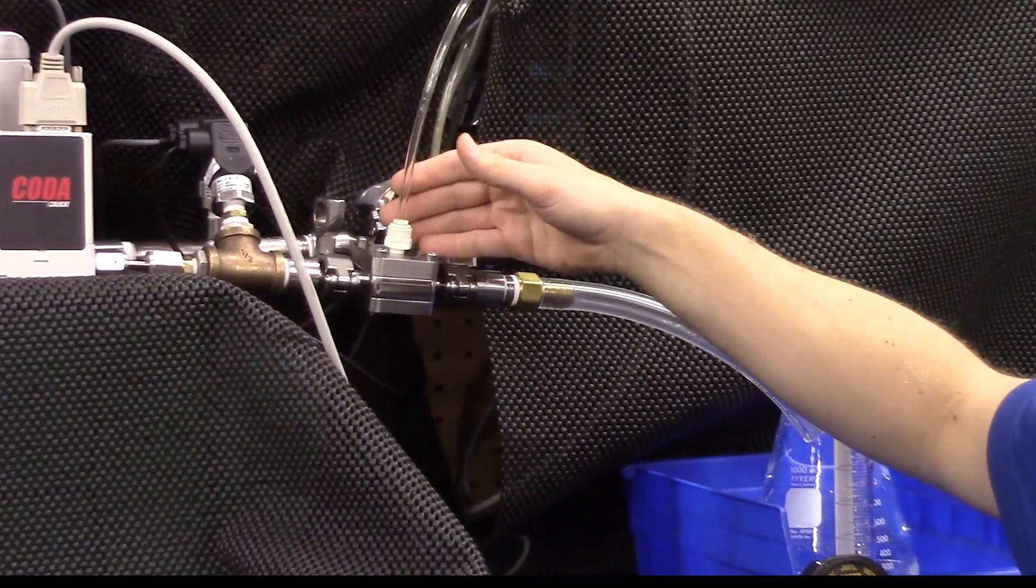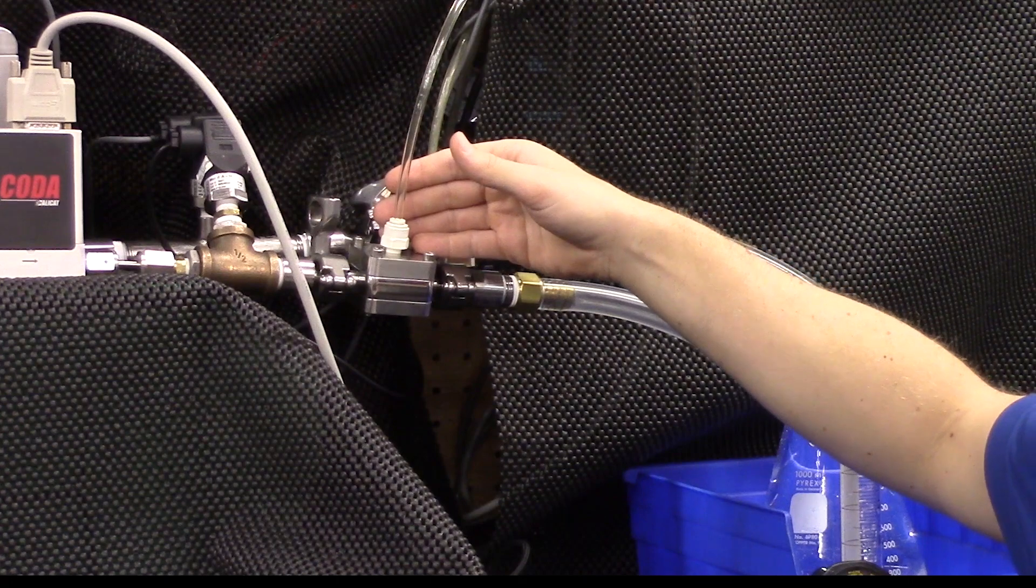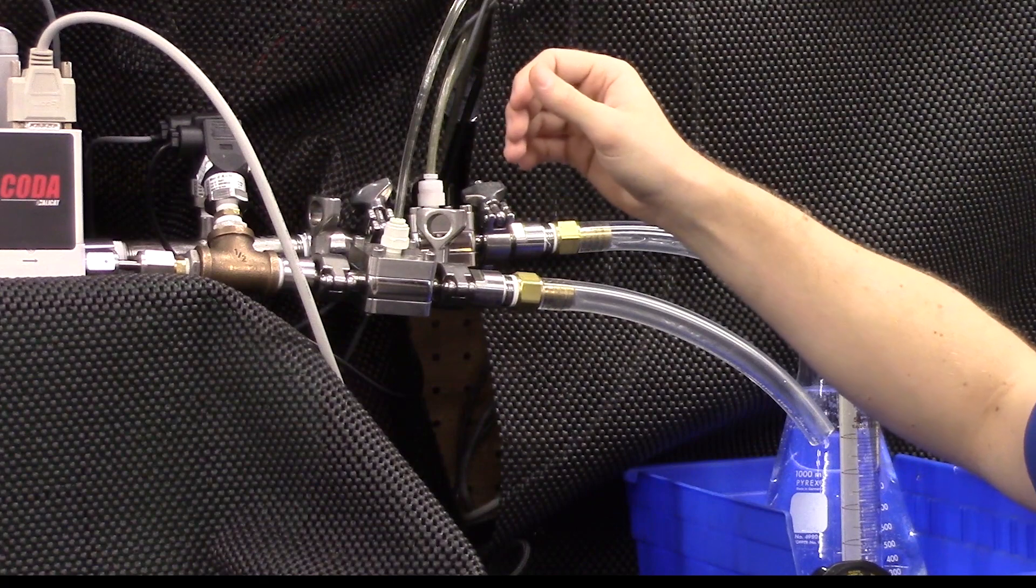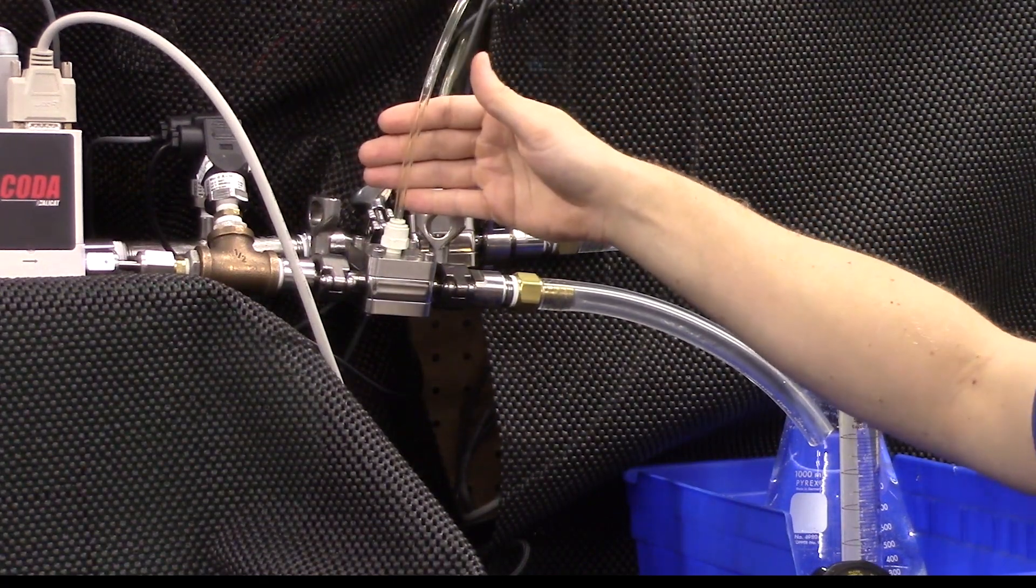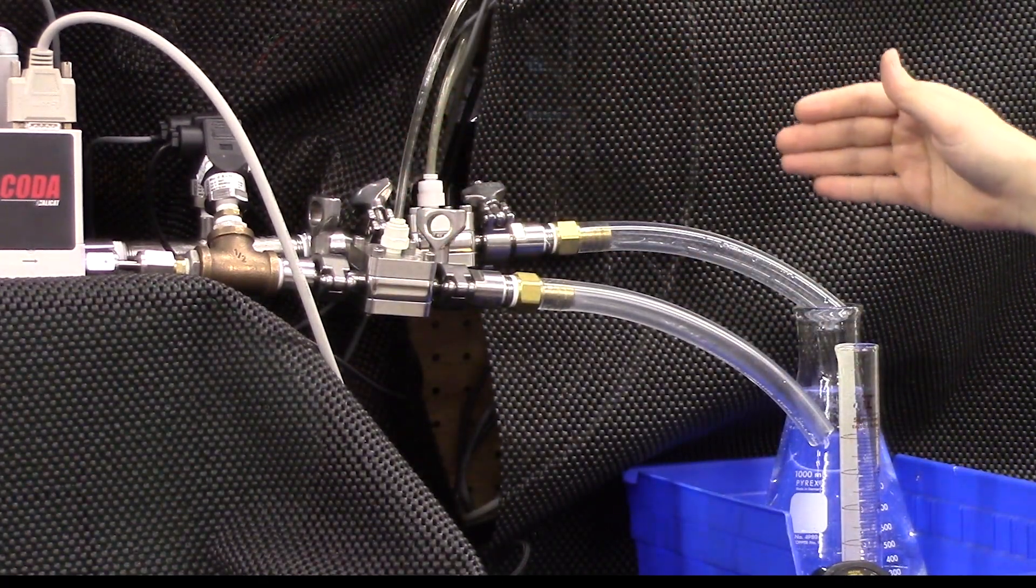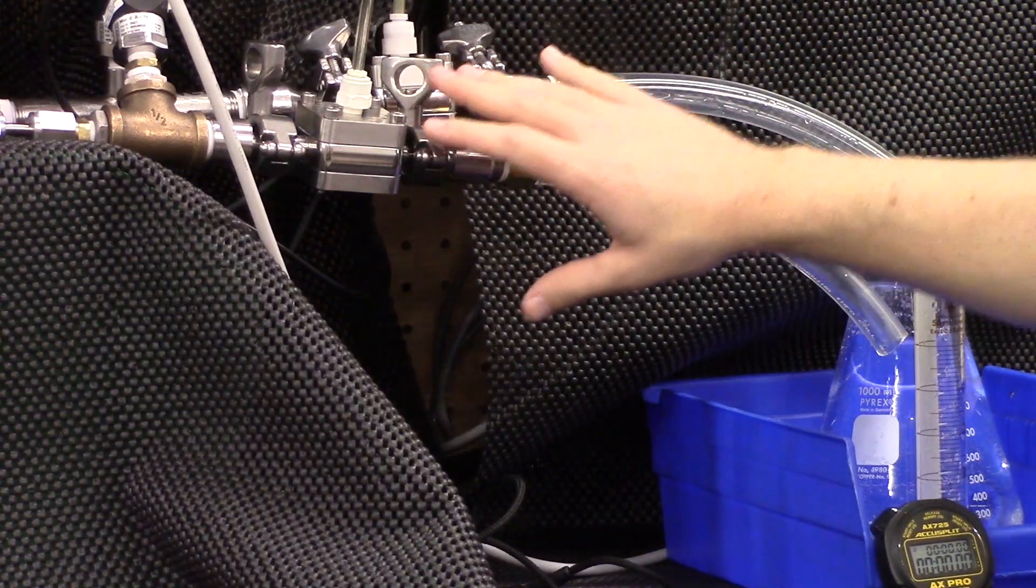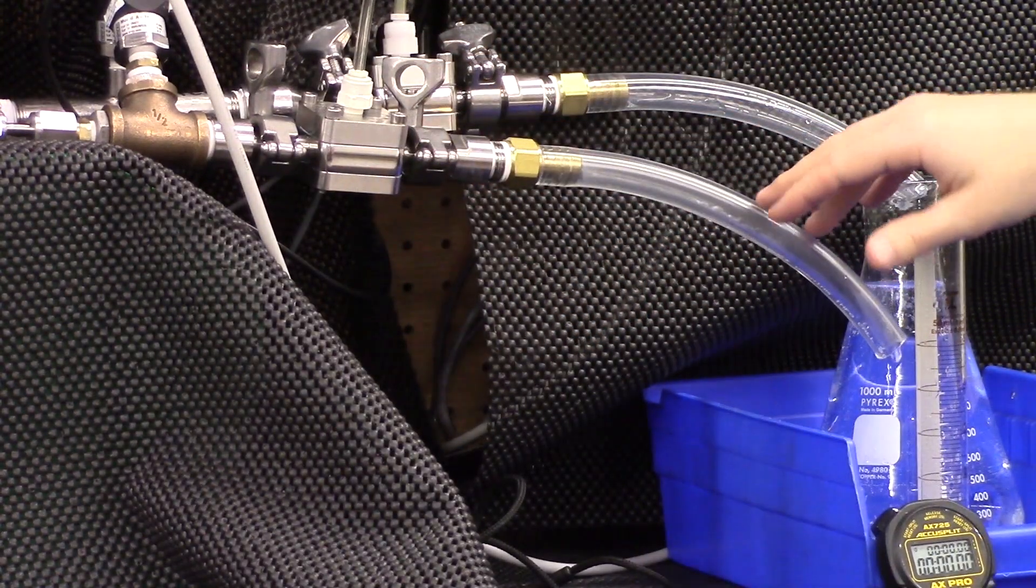For some additional information on how that works, feel free to take a look at our normal flow control how it works video. We can put a link below for some more information there. This pneumatic set point is then controlled to modulate your flow through the back pressure regulator.